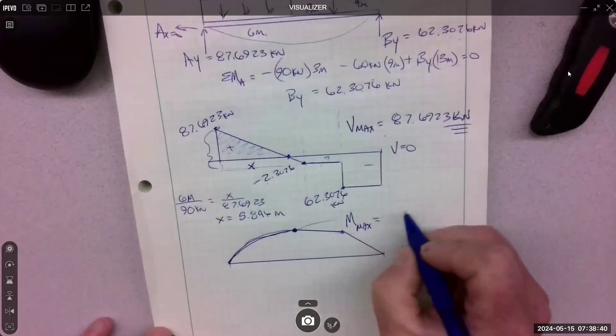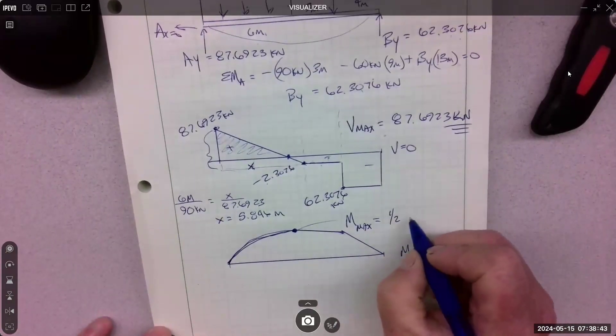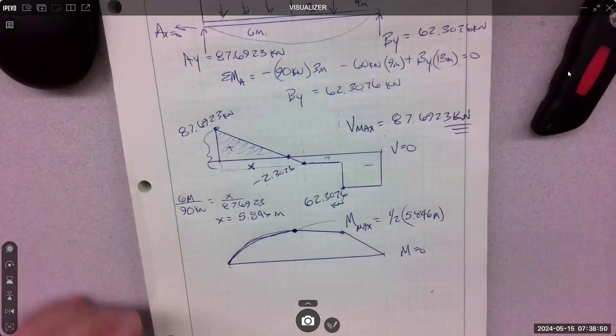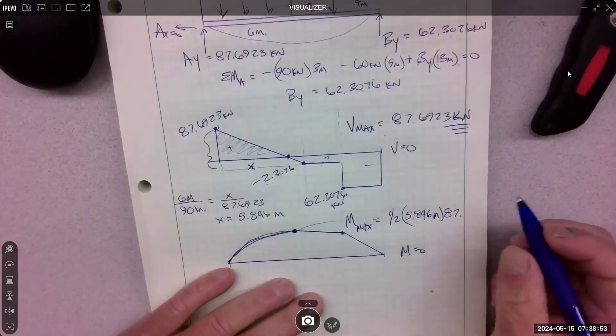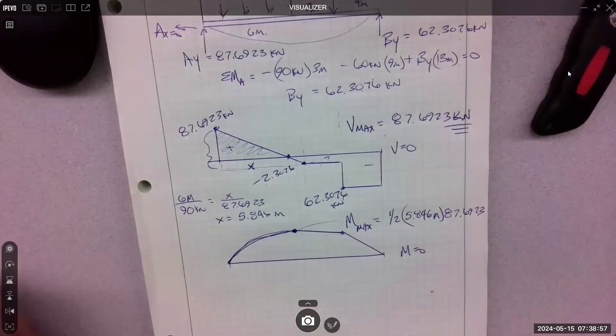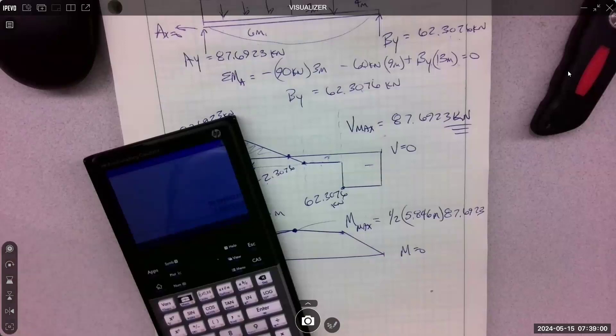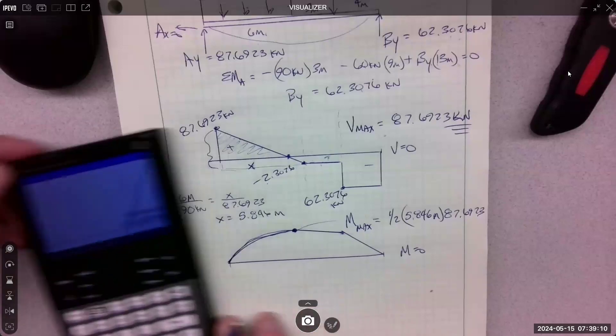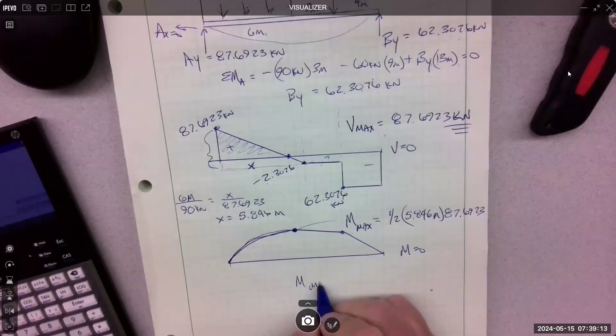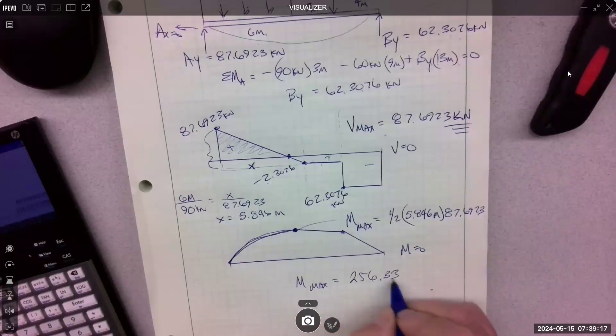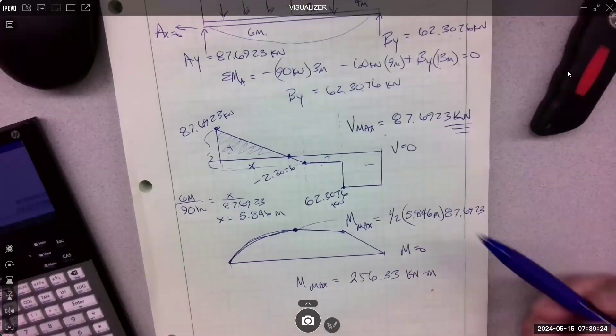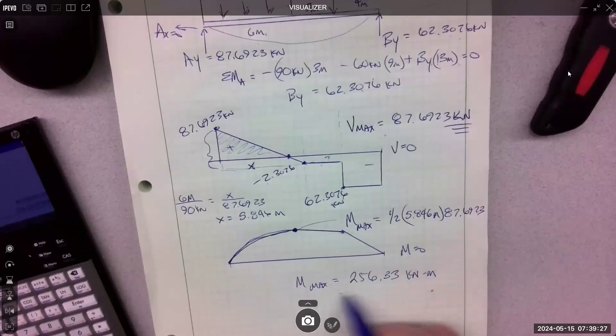Now I can get my maximum moment by going one half the base. That's 5.846 meters times the total height of that triangle, which is 87.6923. Looks like 256.33. And that's going to be a kilonewton meter. I think we're kilonewtons. Yep. And we're meters. Yep. Maximum.